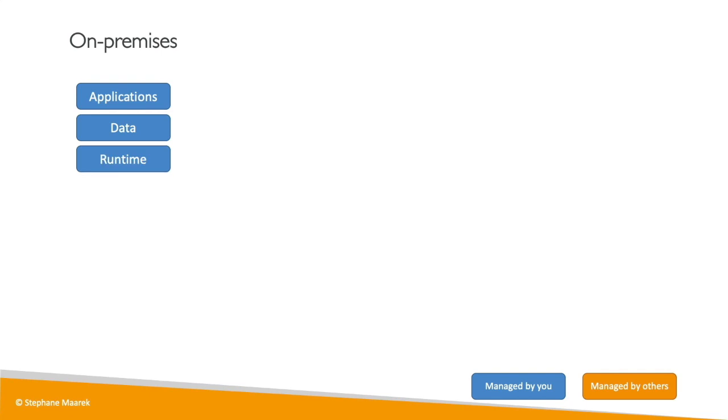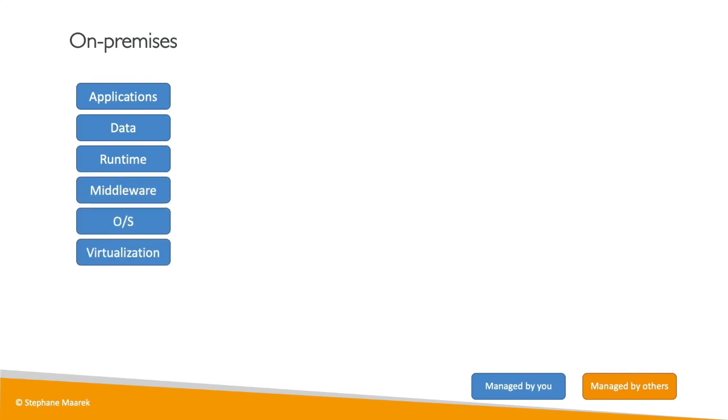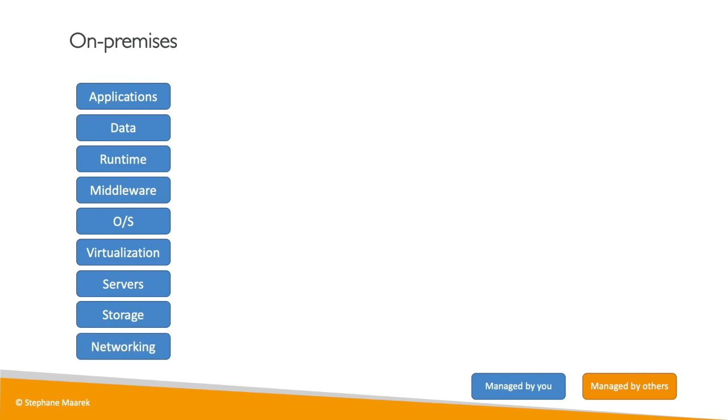If you want to compare all these things, let's take an example. On-premises, you're going to manage everything: your applications, your data, your runtime, your middleware, the operating system, virtualization, servers, storage, and networking. And that's a lot.